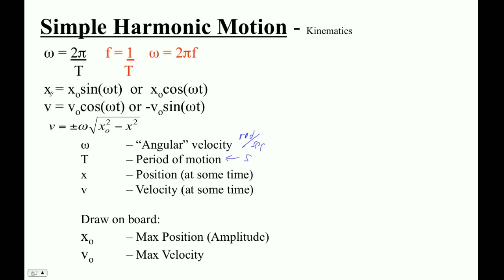Position x is our position at any point in time, in meters. Velocity is in meters per second. x-naught is our maximum position — as far to the right as it gets. The amplitude is the distance from maximum displacement to zero. The middle is x equals zero; here x is positive amplitude, and on the other side it's negative amplitude. As it oscillates back and forth, it goes from positive amplitude to negative amplitude. Equilibrium is at x equals zero.